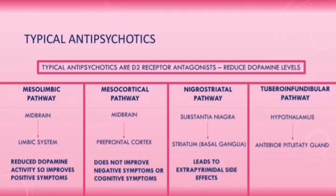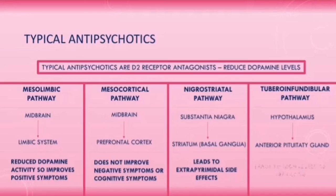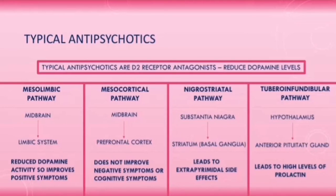For the tubero-infundibular pathway, typical antipsychotics will reduce dopamine activity. Since dopamine and prolactin have an inverse relationship, reducing dopamine leads to high levels of prolactin, causing side effects such as galactorrhea, amenorrhea in females, and gynecomastia in males.